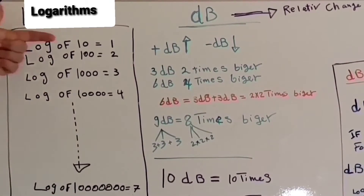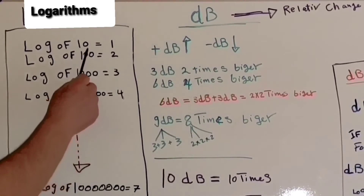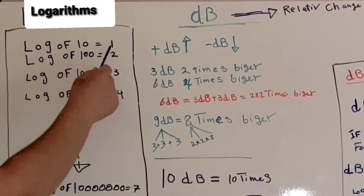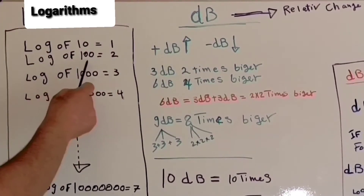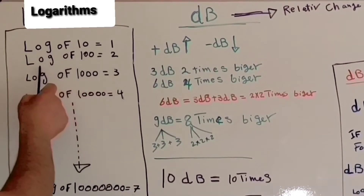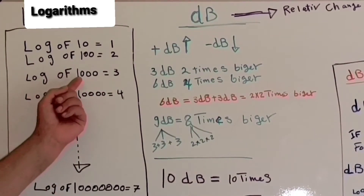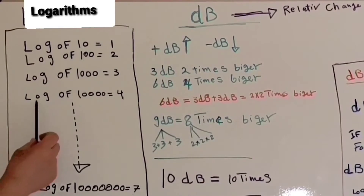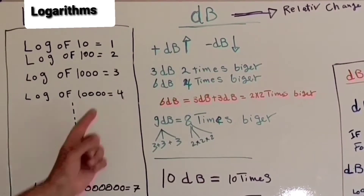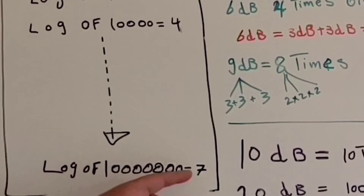How can we find the logarithm? Log of ten is one, because ten has one zero. Log of hundred is two, because hundred has two zeros. Log of one thousand is three because we have three zeros. Log of ten thousand is four, and so on. Log of ten million is seven because we have seven zeros.